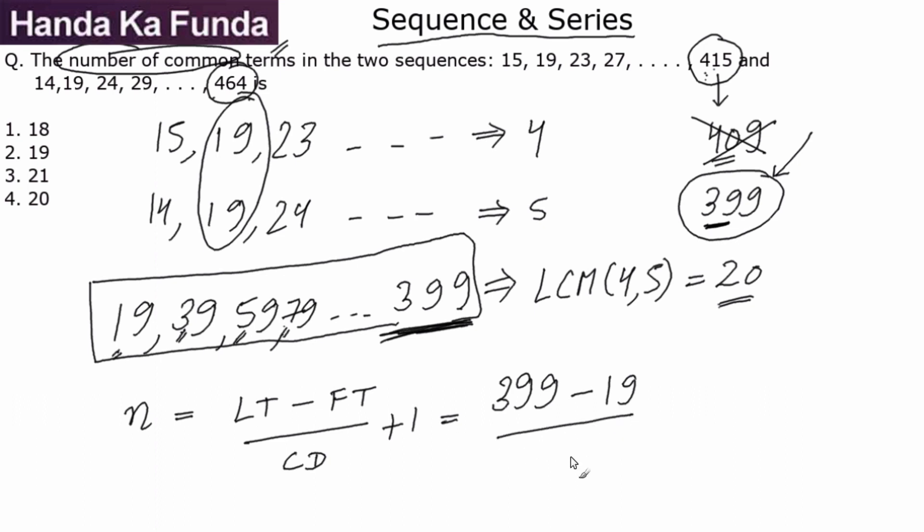So this is 380 by 20 plus 1, which is 19 plus 1, which is nothing else but 20, or option 4 becomes my answer.